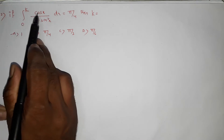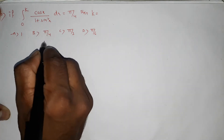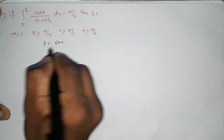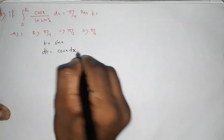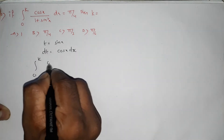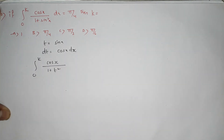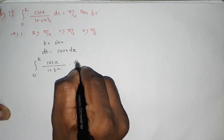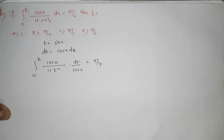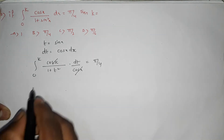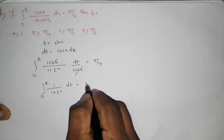Next: integration 0 to k, cos x by (1 plus sin squared x) dx equals pi by 4. Let t equal to sin x, so dt equals cos x dx. In place of sin x write t, in place of dx write dt by cos x. Cos x cancels. Integration 0 to k, 1 by (1 plus t squared) dt equals pi by 4.